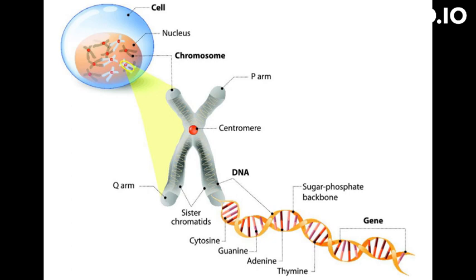Another example is in the field of cancer research, where cytogenetics is used to identify chromosomal abnormalities that may lead to cancer development. For instance, a specific translocation of chromosomes, t(9;22)(q34;q11), can be used to identify patients with chronic myeloid leukemia (CML), which is a type of cancer of the blood and bone marrow.